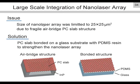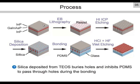This is the process flow. First, we prepared the gallium indium arsenide phosphide quantum well epitaxial wafer, which is commercially available. Then, hole patterns of photonic crystals are formed by electron-beam lithography and HI dry etching. The holes are buried by silica from the hydrolysis of TEOS. The processed surface of the wafer is bonded on a glass substrate with PDMS resin. Silica in the holes inhibits PDMS from passing through the holes. Finally, the phosphide substrate and silica are removed by HCl and HF wet etchings.